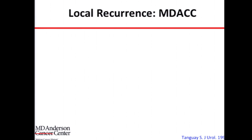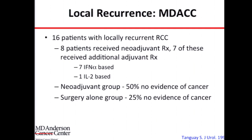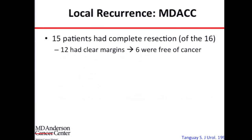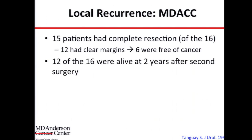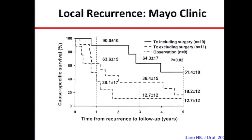One of our earliest series, from almost 20 years ago, reported on 16 patients with locally recurrent kidney cancer. We found that cures were still achievable in this population. 15 out of 16 patients had a complete resection, most had clear negative margins, and 12 of 16 were still alive after the second operation.